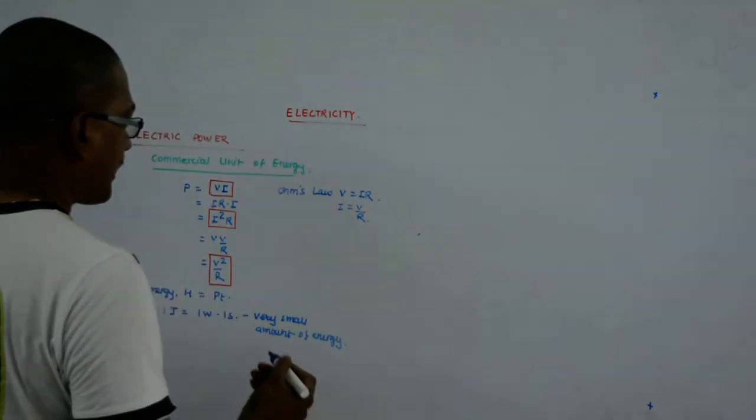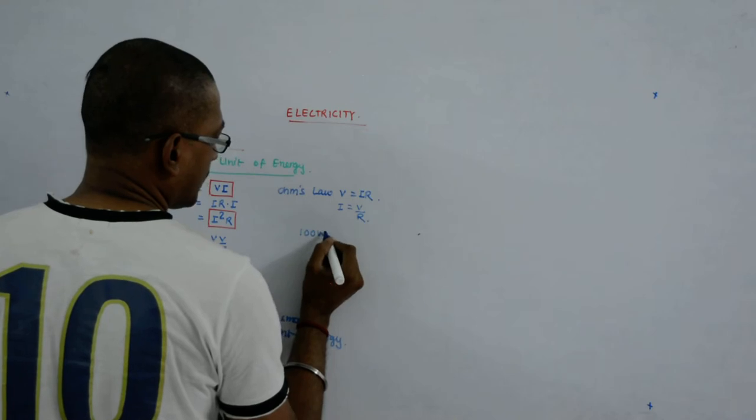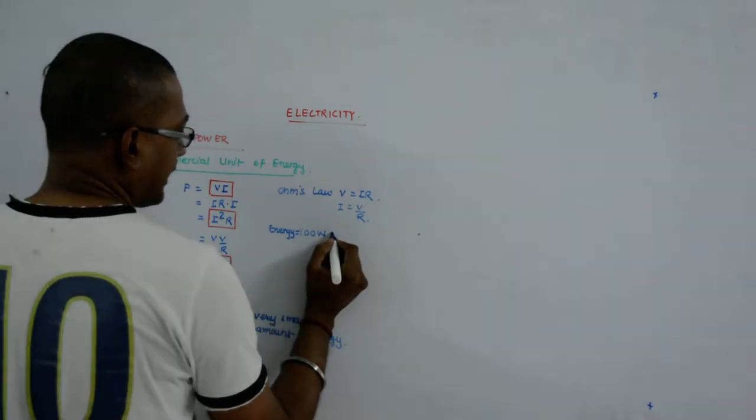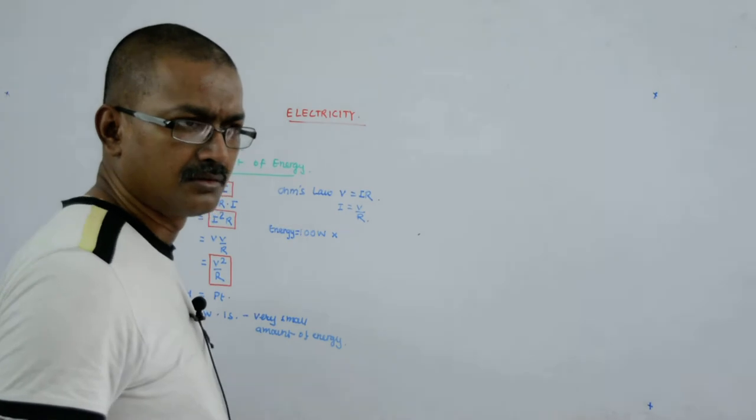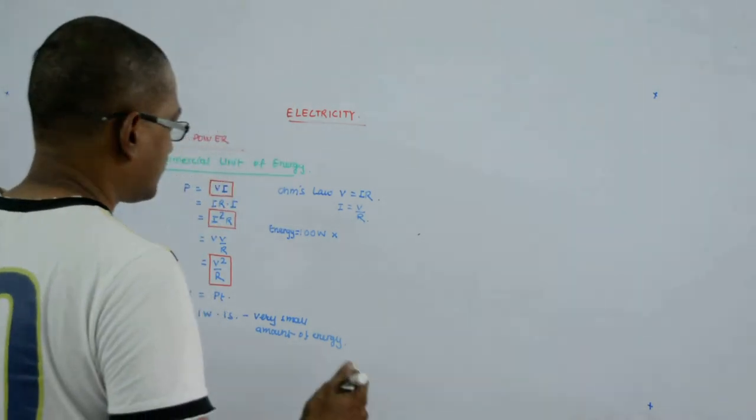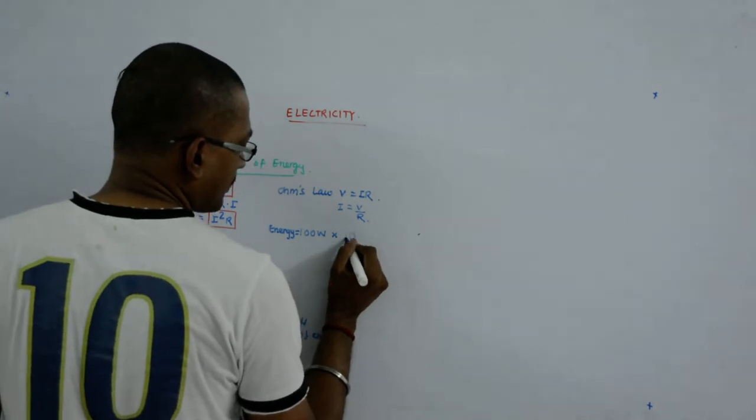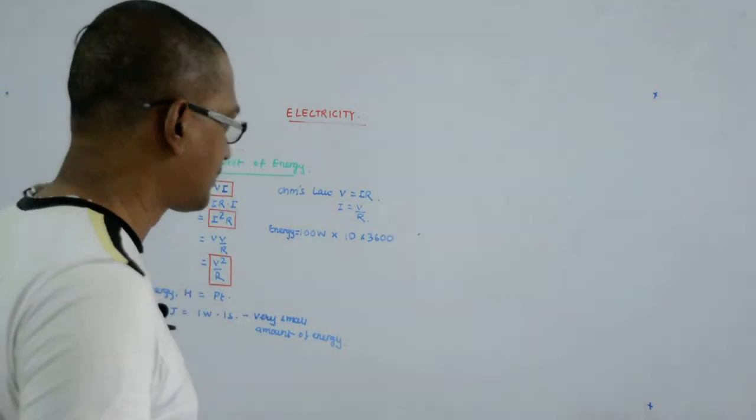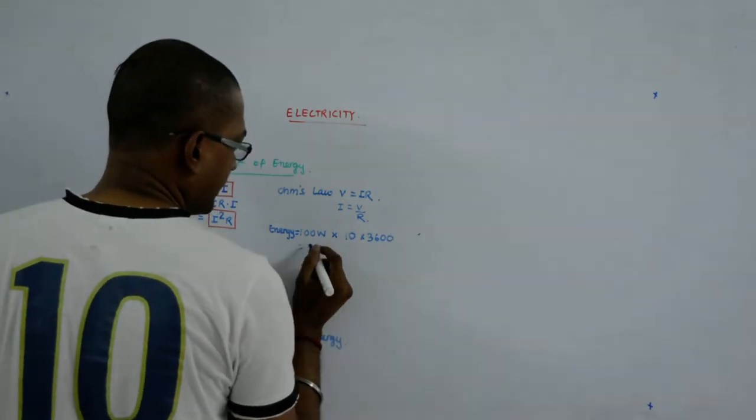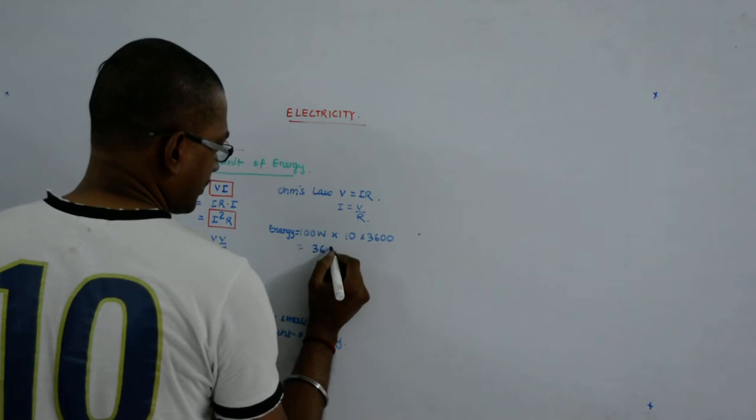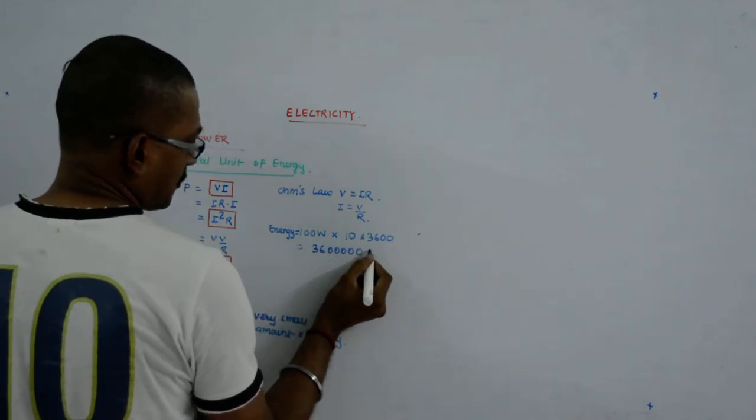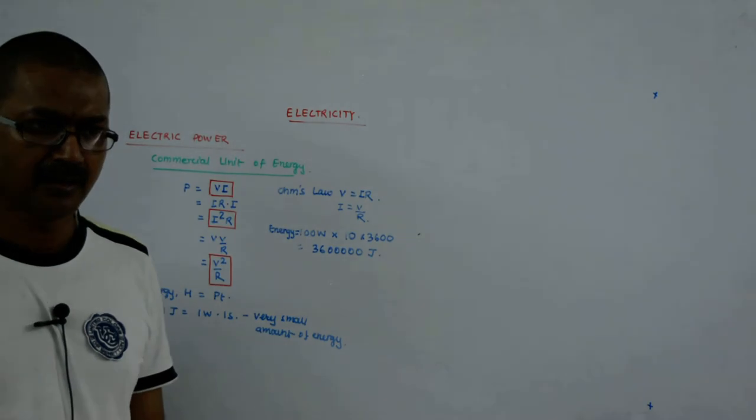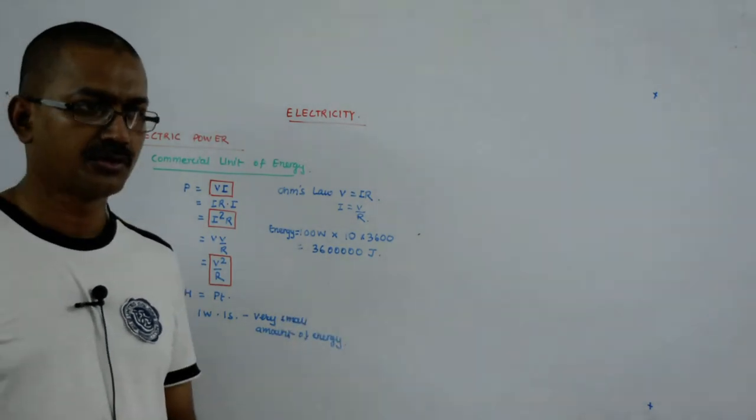Typically a hundred watt bulb, if it runs for say 10 hours a day - 10 hours has got how many seconds? Per hour has 3600 seconds. So if I multiply this, this gives me 3600 so many joules. Only one bulb that you typically use for 10 hours a day consumes so much of energy.